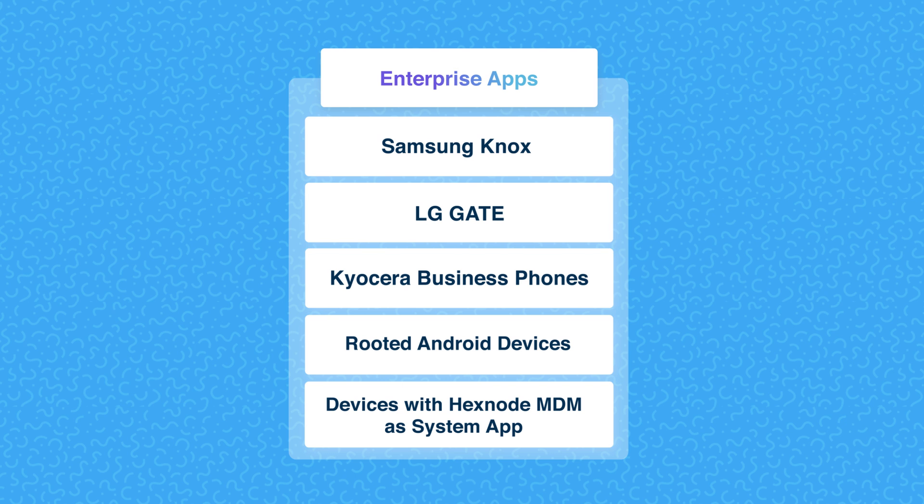Only enterprise apps can be installed silently. Apps can be pushed either directly via an installation action or via automated rollout through policies.